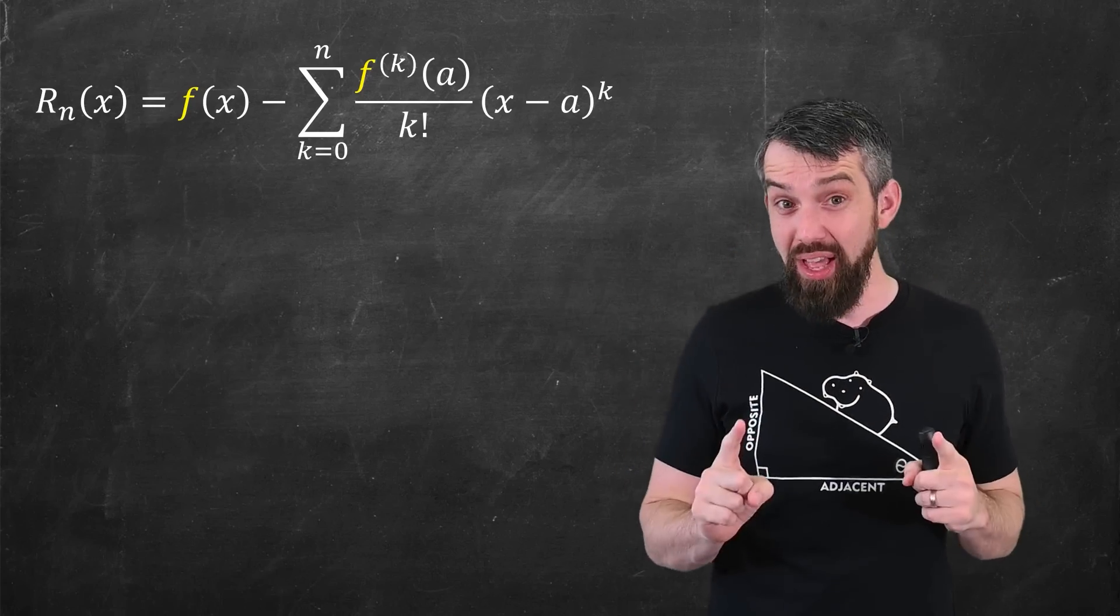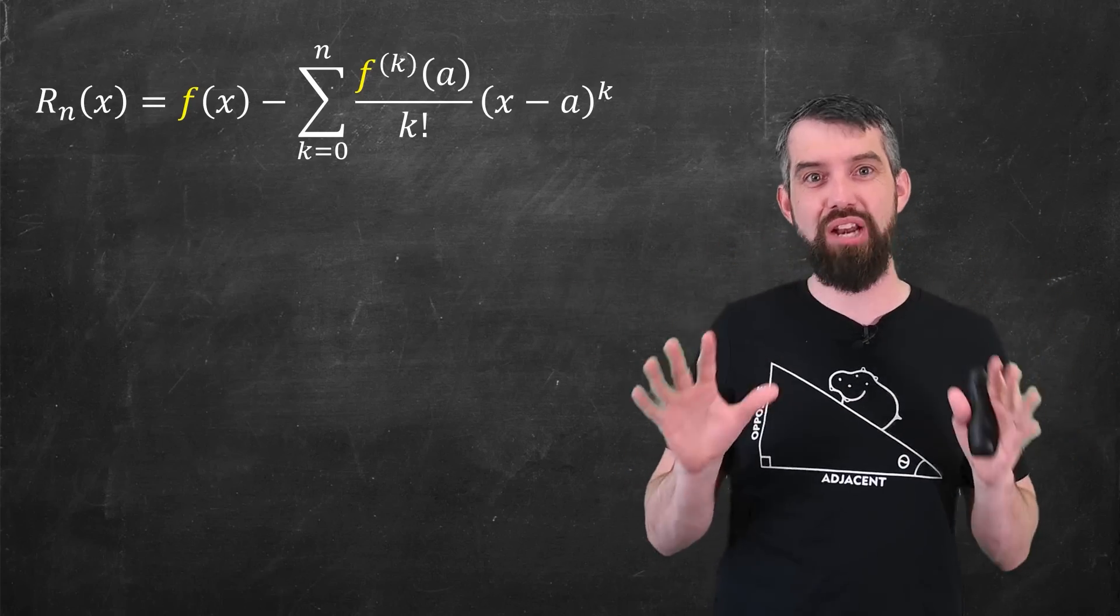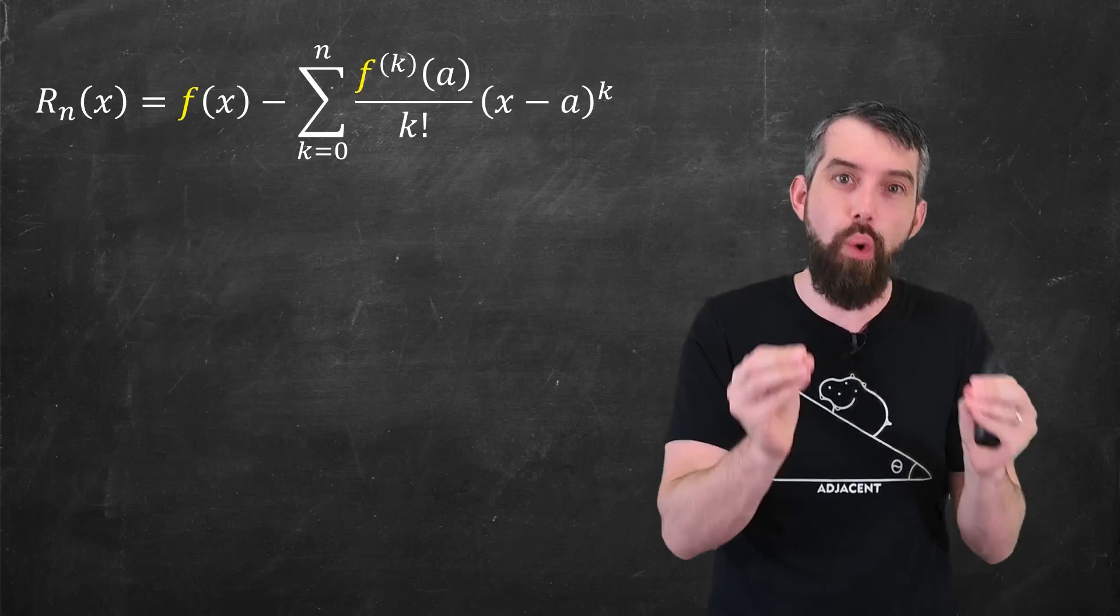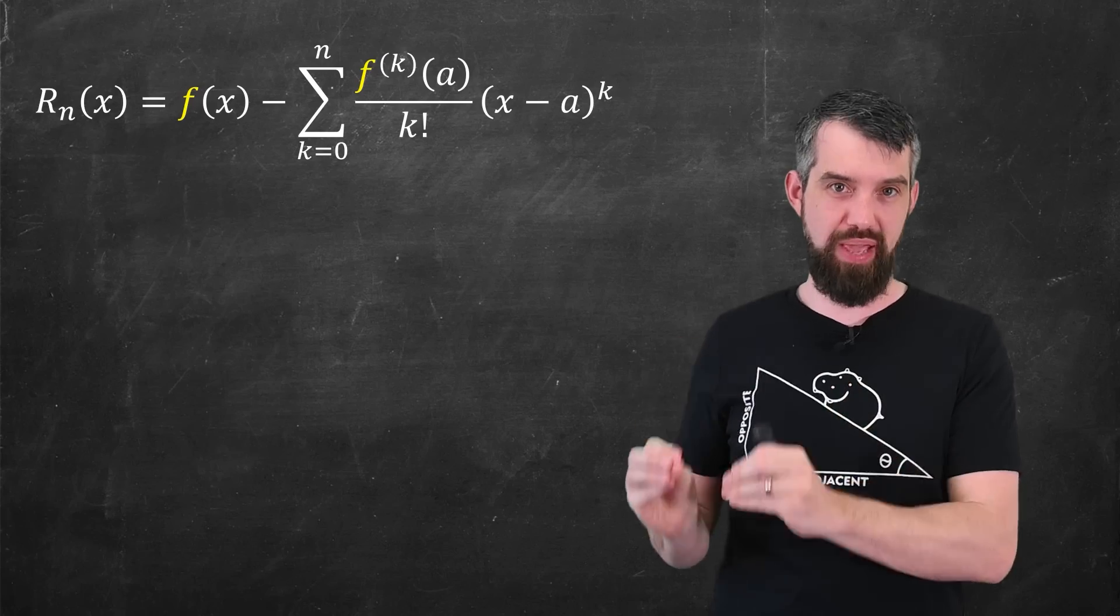And the real thing that makes all of this Taylor series business work is that we have theorems that control how bad that remainder can be.